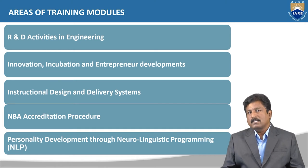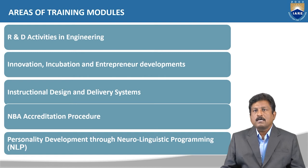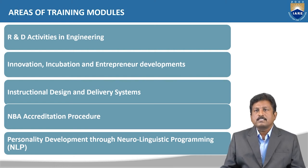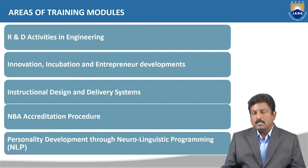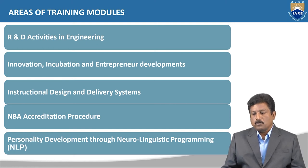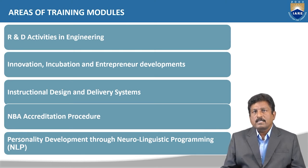The seventh module is instructional design and delivery systems — how to create effective instructional design and delivery systems for students in engineering. The eighth is the NBA accreditation procedure — how to process NBA accreditation in engineering colleges. The ninth is personality development through NLP programming. These are the 10 modules to be conducted in the faculty training program called IRE FACTS 2K21.